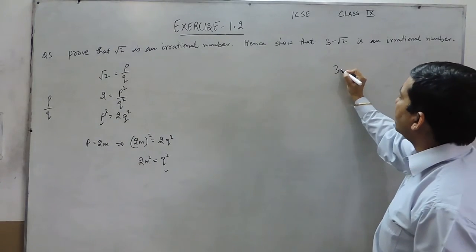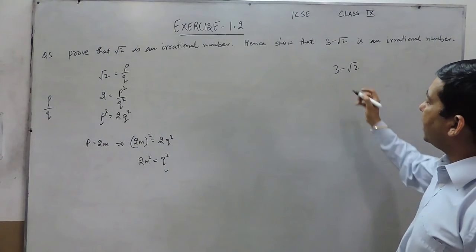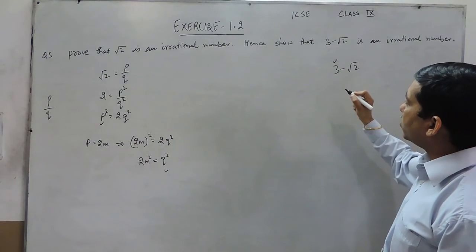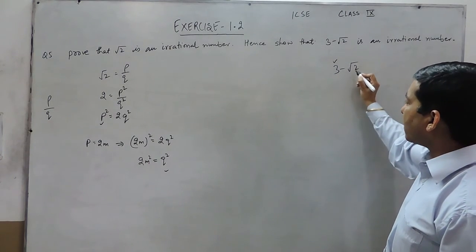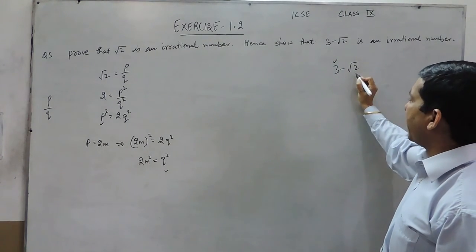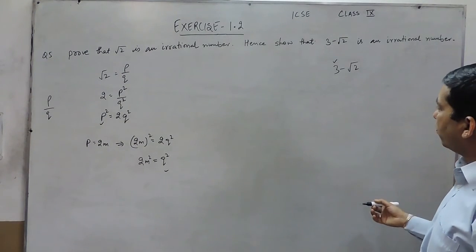Now we have to show that 3 - √2 is also an irrational number. We have to keep one thing in mind: if we add, subtract, or multiply any irrational number with a rational number, then it becomes irrational automatically.